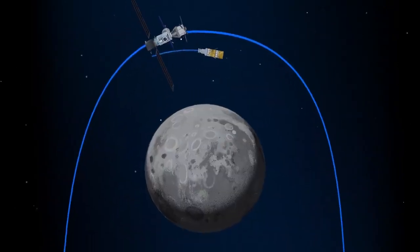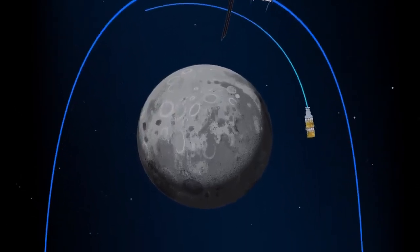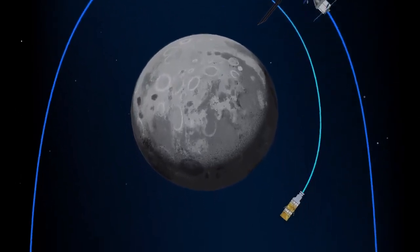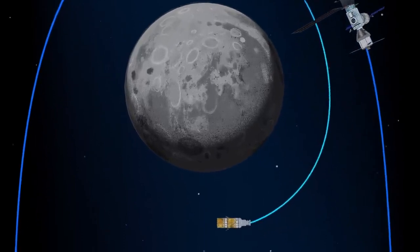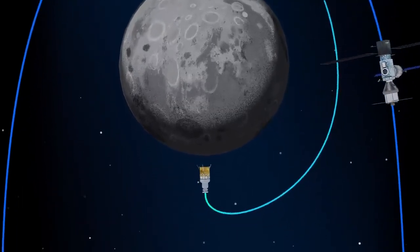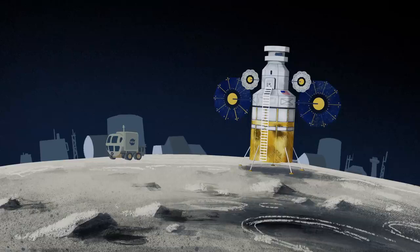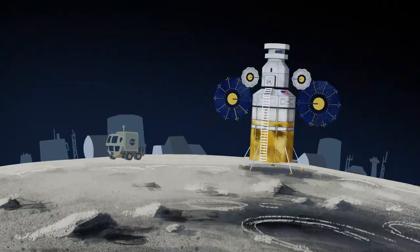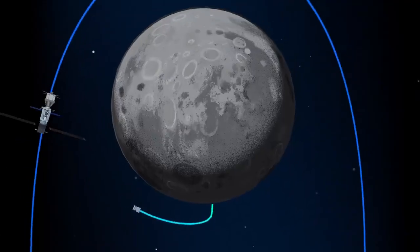The lunar lander system itself is built for three unique steps: descending from the halo orbit of Gateway down to a low lunar orbit, descending from low lunar orbit to the surface, and once the lunar mission is complete, launching from the surface of the Moon and ascending all the way back to the orbiting Gateway.